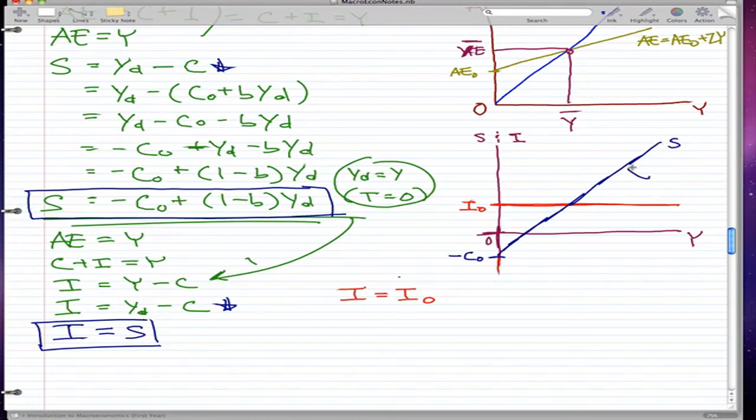And this would be our slope, and our slope would be 1 minus b, because if this was AE equals AE₀ plus zy, our negative C₀ would be our AE₀, and our 1 minus b would be our z.